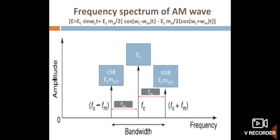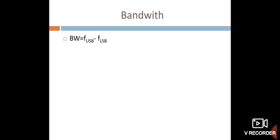The frequency and phase of the modulated signal remains constant. The amplitude of the sidebands is dependent on modulation index. The bandwidth of the amplitude modulated wave is given by: BW = 2fm, that means BW = fUSB − fLSB = (fc + fm) − (fc − fm) = 2fm. The bandwidth of amplitude modulated wave is equal to 2fm.